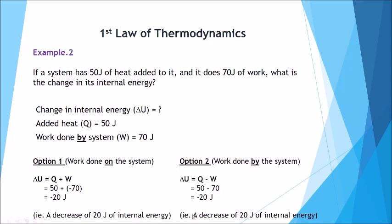Option two: the same problem from a physics perspective. Delta U equals Q minus W, where W is the work done by the system. There is heat added of 50 joules minus the work done by the system which was 70. 50 minus 70 gives minus 20, so the internal energy is decreased by 20 joules.